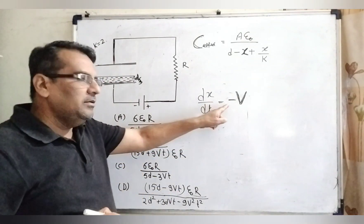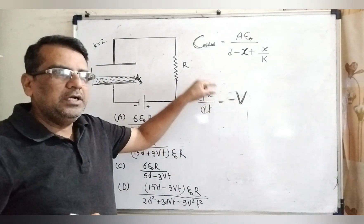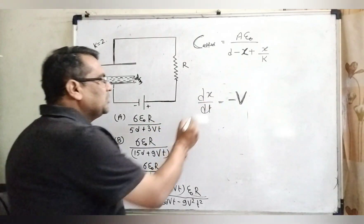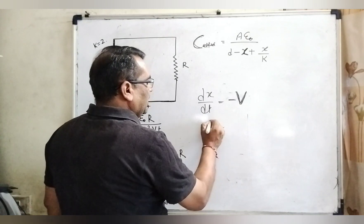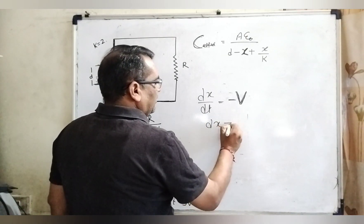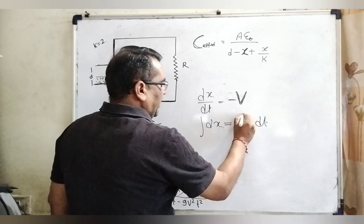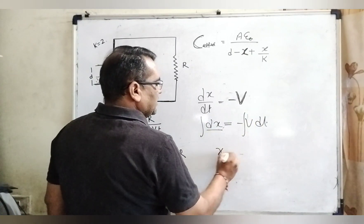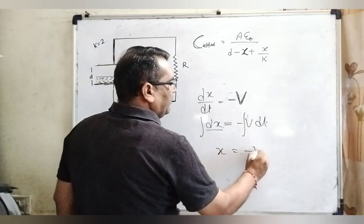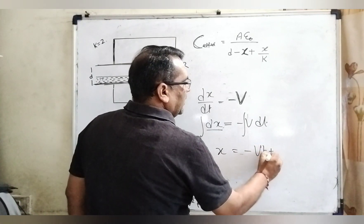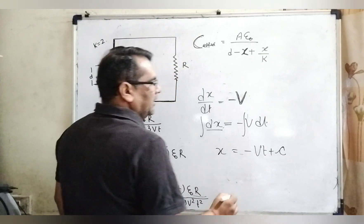So remember again, minus V shows decreasing the velocity and here V is capital V is the velocity. So dx by dt equal to minus V. Now, dx equal to minus Vdt. Integrate. Now it becomes x equals minus Vt plus here small c is constant.